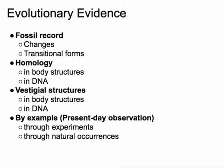When we're looking at major lines of evidence for evolution, the four that I find the most convincing are the fossil record, homology, vestigial structures, and by actually observing it. This video is going to focus just on the first bullet, which is the fossil record.